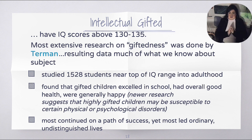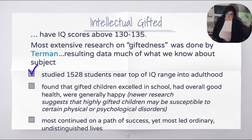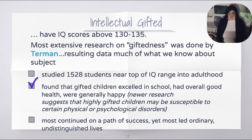Let's talk about the other end now — intellectually gifted kids. Intellectually gifted children have an IQ score of about 130 to 135. The most extensive research on giftedness studied over 1,500 students near the top of the IQ range all the way into adulthood. They found that the gifted children excelled in school, had good overall health, and were generally happy. Newer research suggests that highly gifted children may be susceptible to certain physical or psychological disorders like depression. Most continued on a path of success, though, and led ordinary and undistinguished lives.